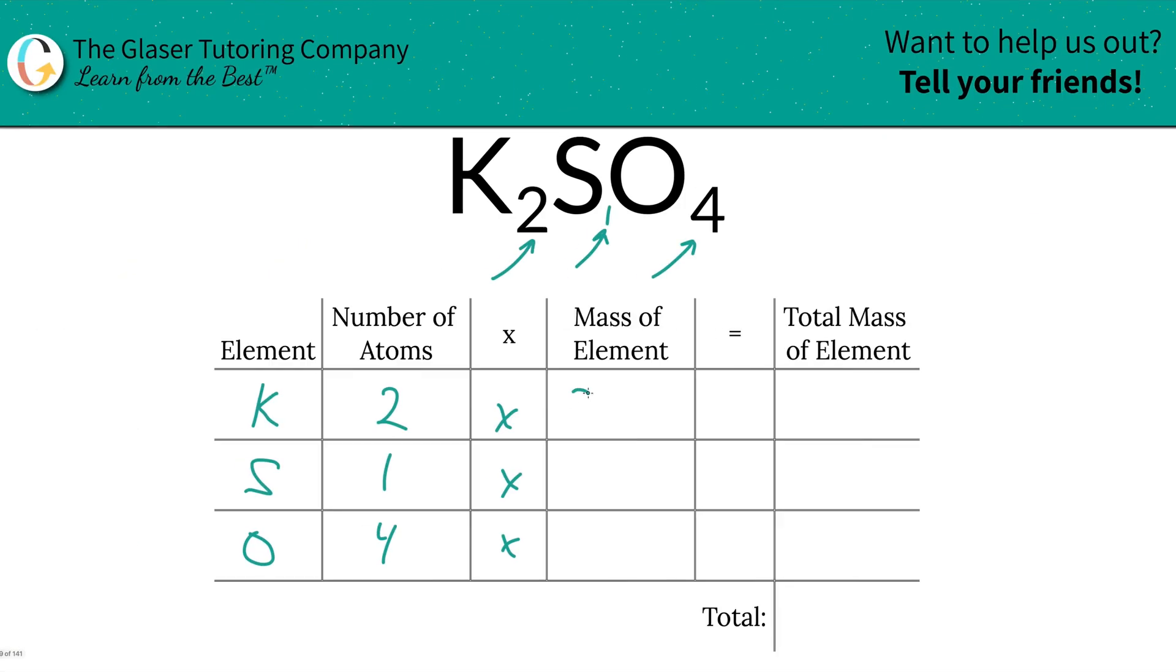So let's write them in. So this is going to be 39.10 for potassium. Sulfur is going to be 32.07, and then oxygen was 16. Then, well, that looks like 16w. There you go.